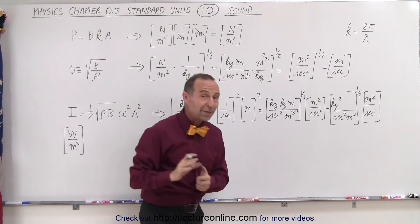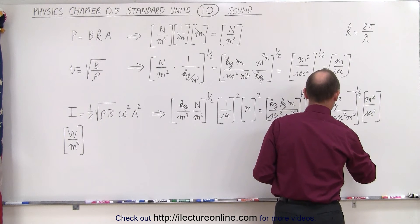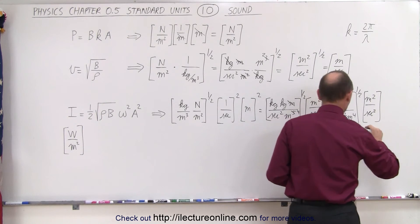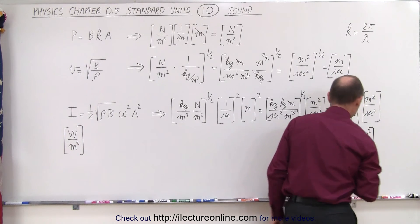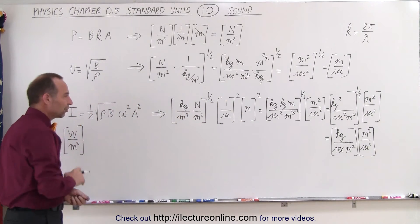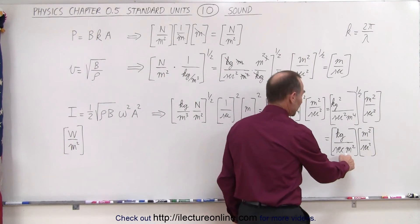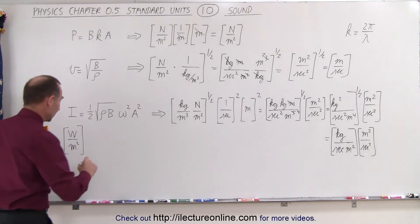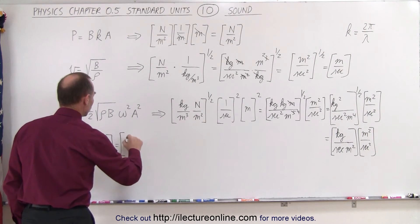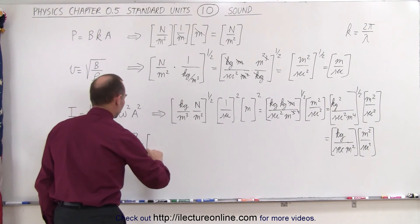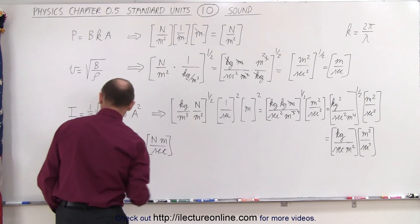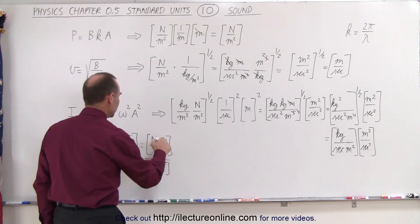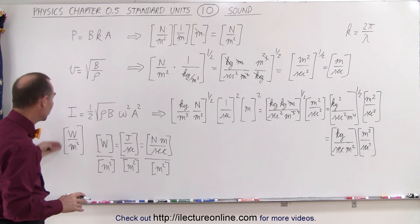Taking the square root gives kilograms over seconds times meters squared, multiplied by meters squared over seconds squared. Now, a watt equals a joule per second, and a joule equals a newton·meter, so a watt equals newton·meters per second. Therefore watts per square meter requires newton·meters per second divided by meters squared. We already have meters squared in the denominator, so we need newton·meters per second from the remaining terms.